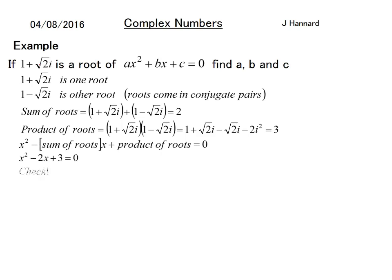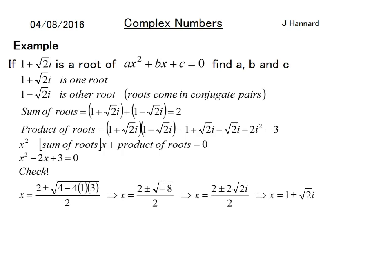So x² - (sum of roots)x + (product of roots) = 0, which gives x² - 2x + 3 = 0. You can check it with the quadratic formula: x = (2 ± √(4 - 12)) / 2 = (2 ± √(-8)) / 2 = (2 ± 2√2i) / 2 = 1 ± √2i. This is such a powerful tool in mathematics. So a = 1, b = -2, c = 3.